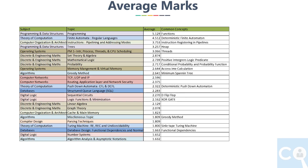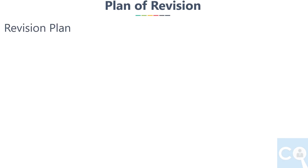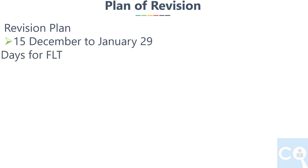The Excel sheet with this data will be shared in the drive — the link will be given in the description. Based on this analysis, we will distribute the number of revision days to each topic. The revision plan will run from 15 December to January 29, giving us 45 days for revision and the remaining 3 days for full-length tests.